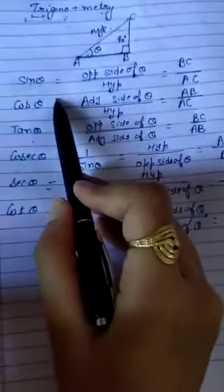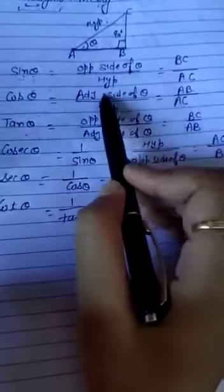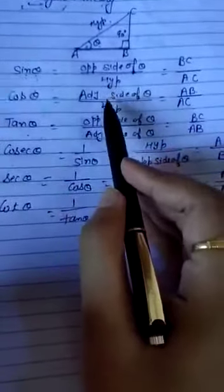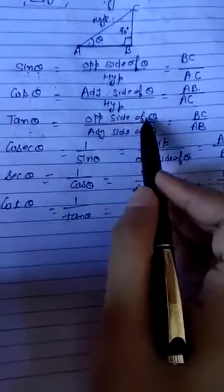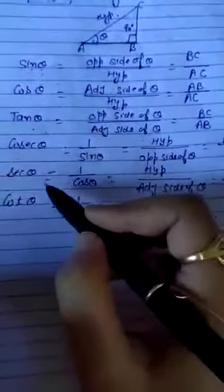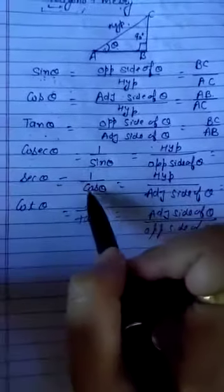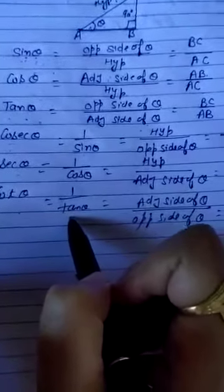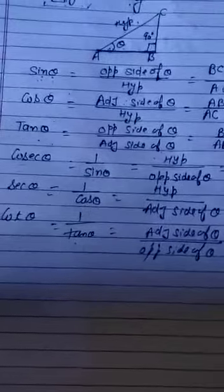These are our six trigonometry ratios. First is sin theta, second is cos theta, then tangent theta. The value of sin theta is opposite side of theta divided by hypotenuse. Cos theta is adjacent side of theta divided by hypotenuse. Tangent theta is opposite side of theta divided by adjacent side of theta. The other three are only the reciprocals: cosecant is reciprocal of sin, secant is reciprocal of cos, and cotangent is reciprocal of tangent. These are the basic concepts of the trigonometry function.